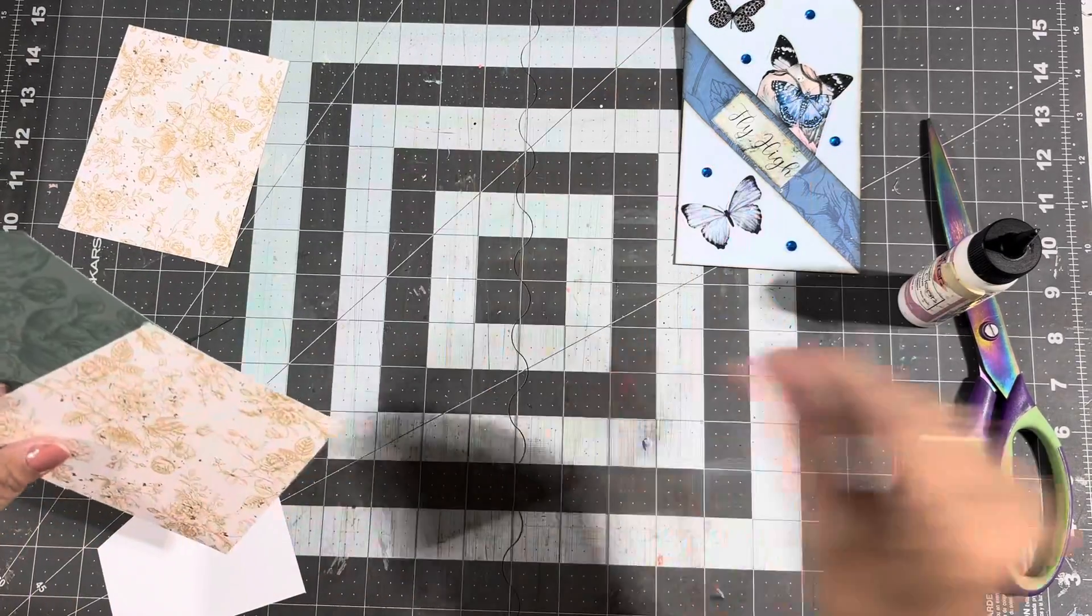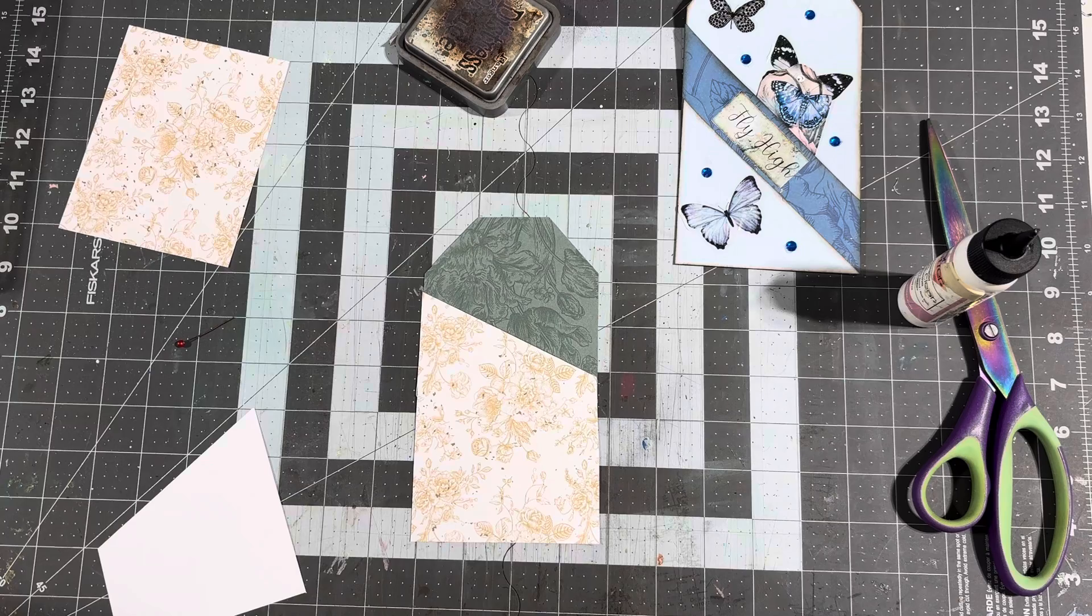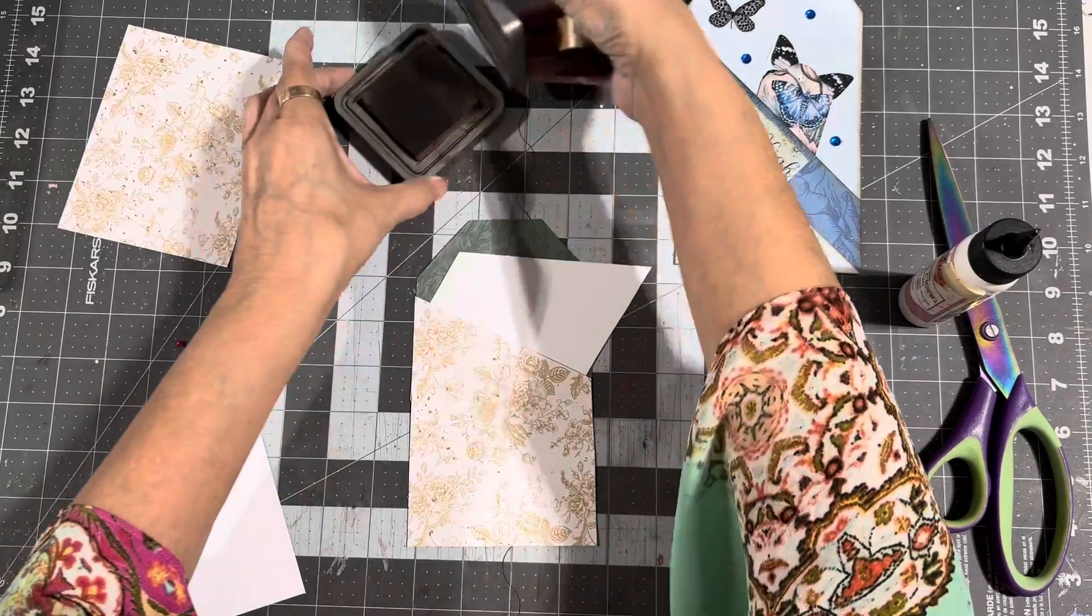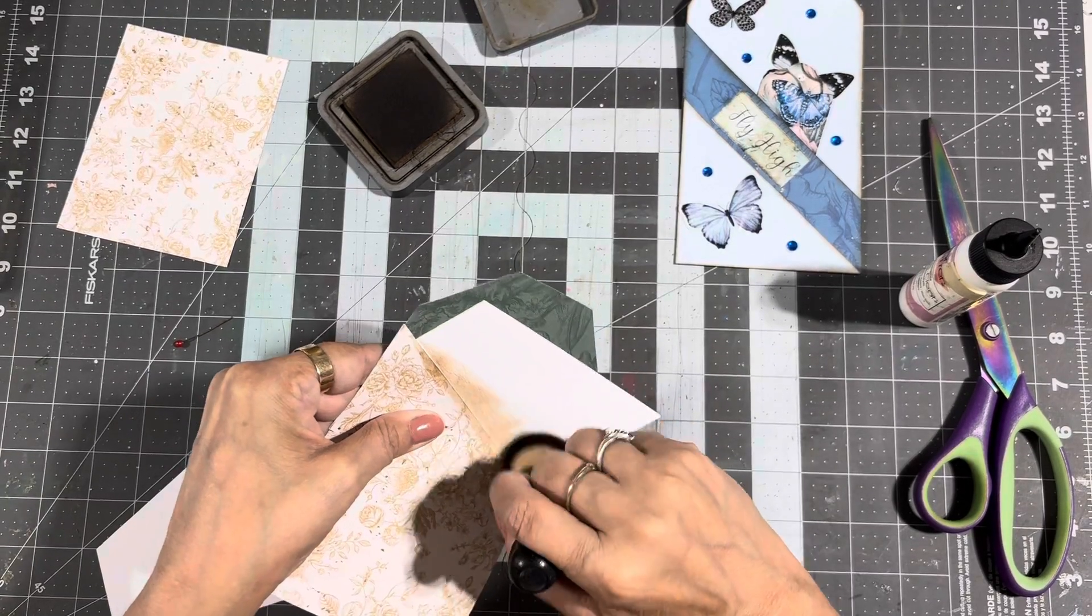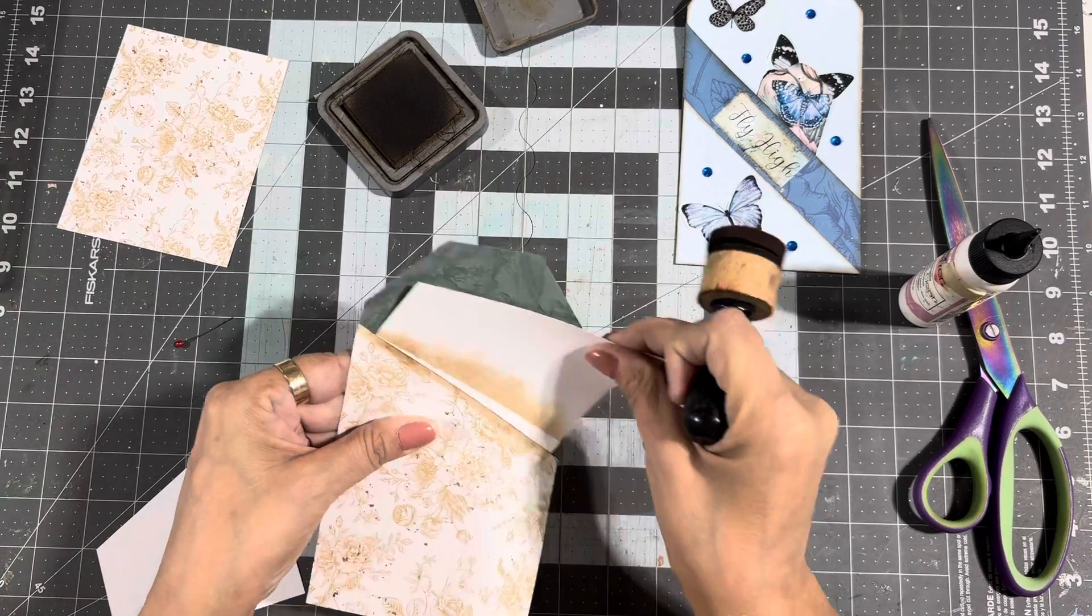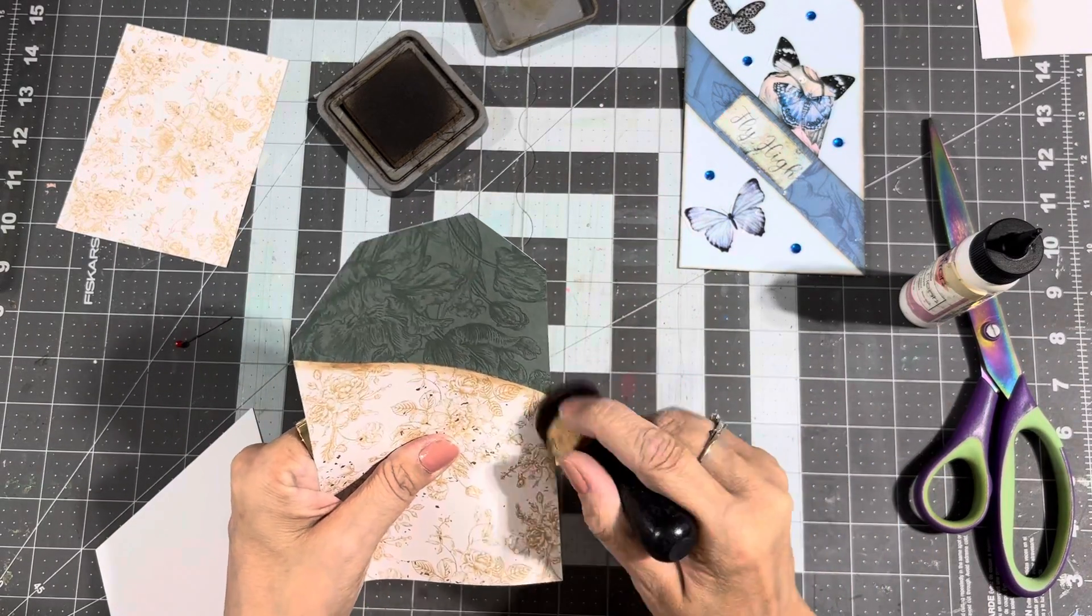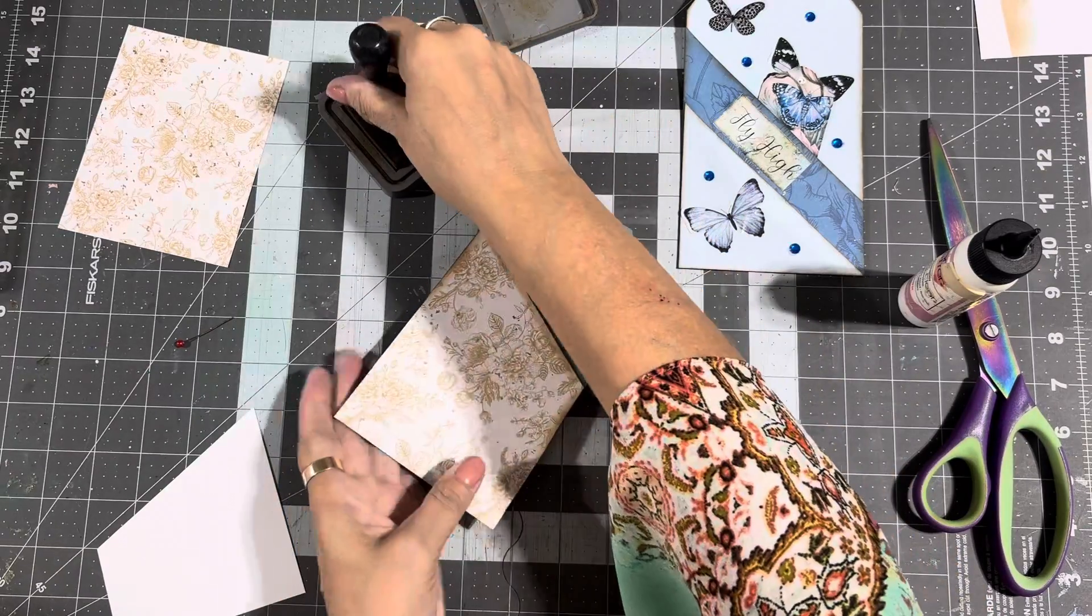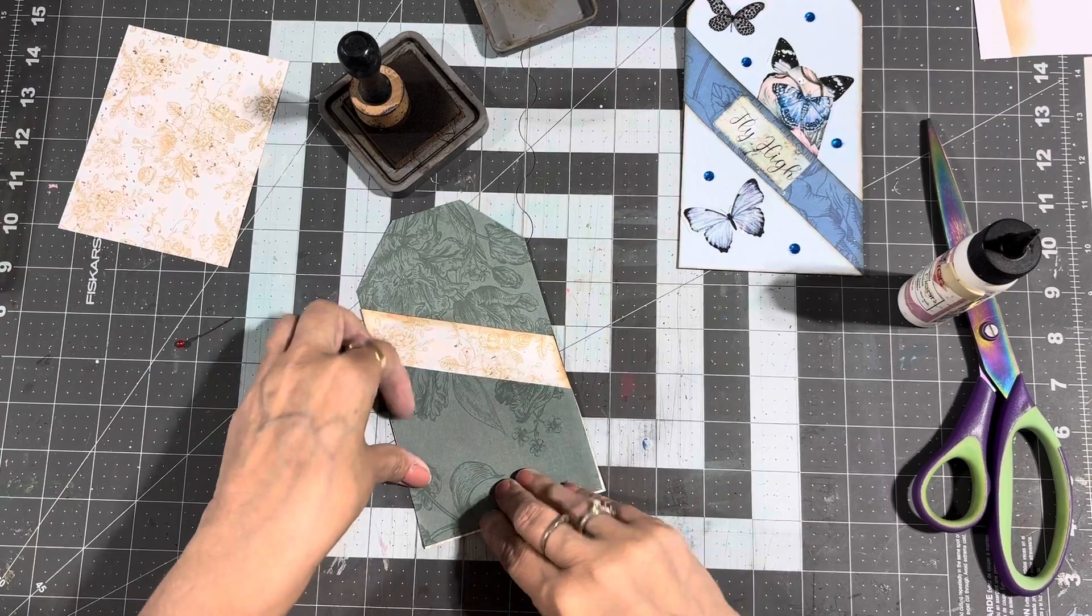I should have inked that first but I'll tell you what, here's a little trick if you don't ink it first. You can take a little piece of scrap paper, scoop that in there and just ink like that. I'll ink the back after I'm done okay.